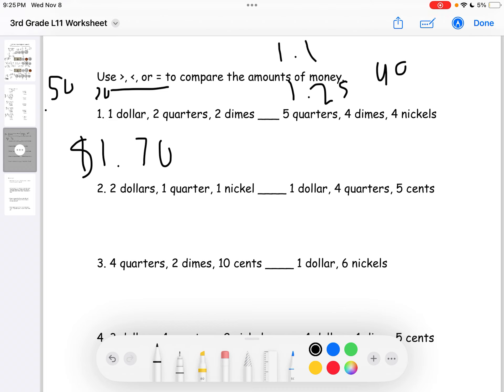The right side has 4 quarters which would be $1.25 plus 4 dimes which equals $0.40. So, at total they'd be at $1.65 now. And the 4 nickels which is $0.20. So, it'll be $1.85 for the right side which means the right side has more.